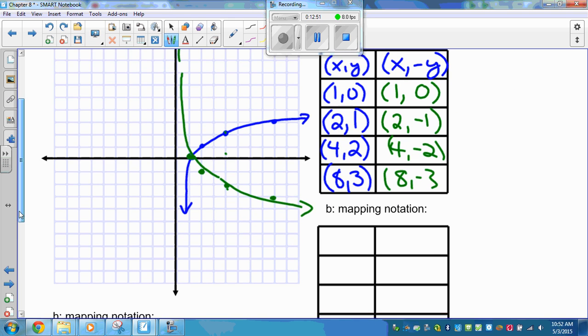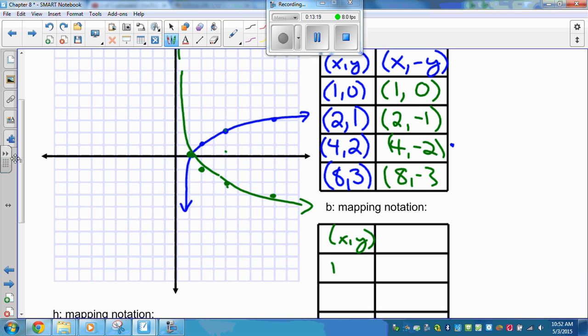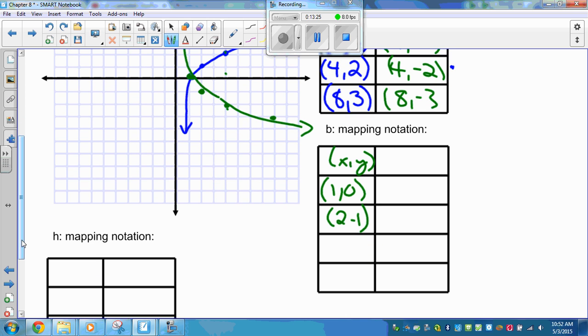Now B. B means we compress X by 1 over B. So we take our original point. We've already applied this first transformation. So let's copy those points because we're going from the first translation we already did. So we have X, Y. I'm just copying all these green points down. 1, 0, 2, negative 1, 4, negative 2, and 8, negative 3. And now we are applying the transformation of B. So it's X over 2 because my B value is 2 and Y.